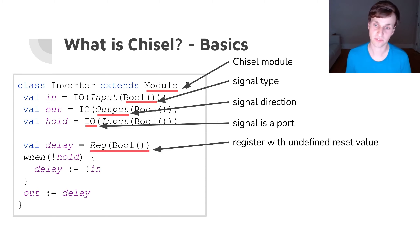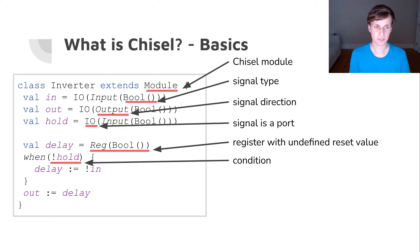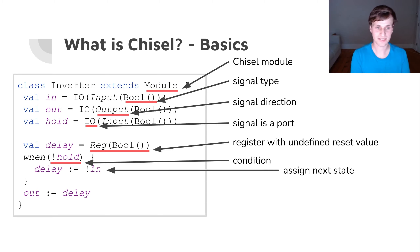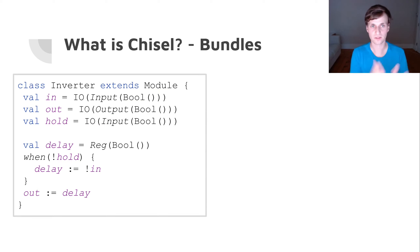This construct defines a register which is of type Bool, but we don't specify any reset value, so when the circuit boots up and is reset it will have an arbitrary value. Here we express a condition: only when hold is false will we assign the delay register with not-in; otherwise the delay register keeps its previous state. Then we connect the delay register to the output of our module, completing our small inverter.